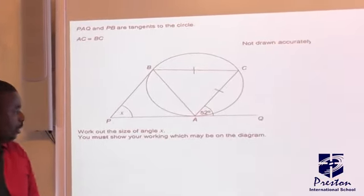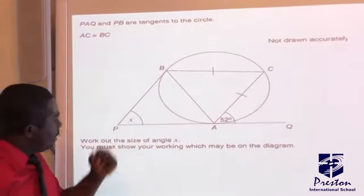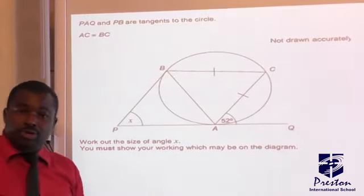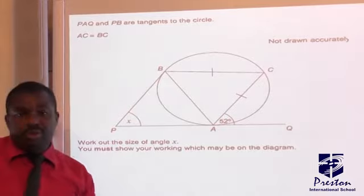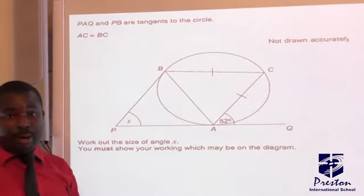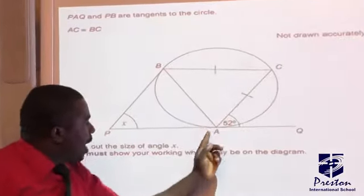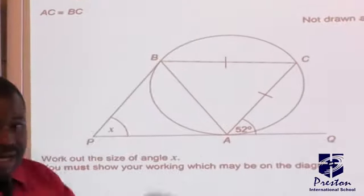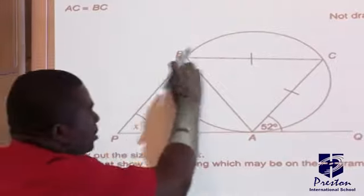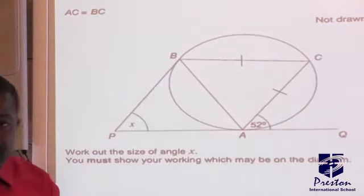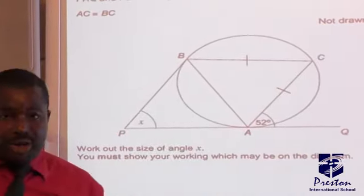So let's look at this particular question. The question is asking us to find the value of X. Anytime you want to solve circle geometry, the first thing you need to do is to inspect the diagram properly. So let's look at this diagram here. Look at BC and AC. We have a sign here.